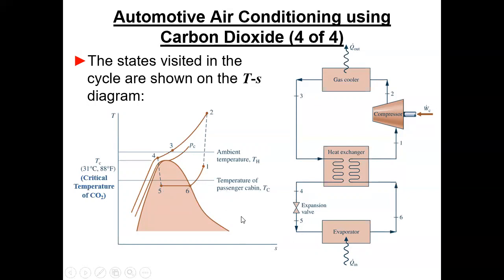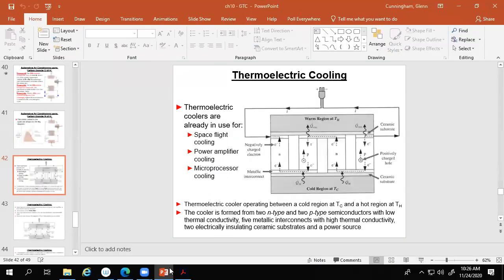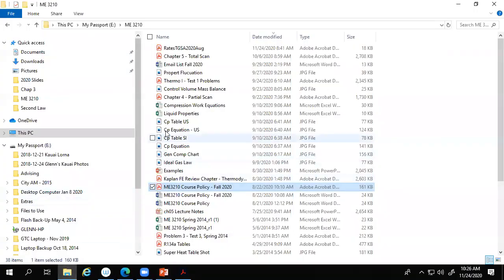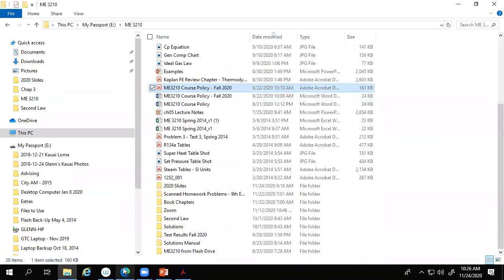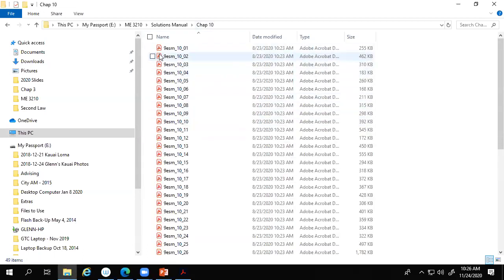That covers automotive air conditioning using CO2. I'll save thermoelectric cooling for next time. Let's pull up some example problems. Problem 10-2 looks like a reasonable one to start with — a Carnot vapor refrigeration cycle with R134A as working fluid, maintaining a cold region at -40°F when ambient temperature is 90°F, with data at principal states given in the table.